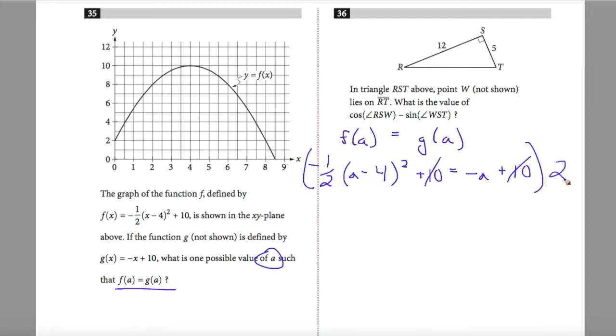I can also multiply this entire equation by 2 in order to eliminate my fraction. Actually, I multiply by negative 2 in order to eliminate both negatives. And here I get (a minus 4) squared equals 2a. I'm going to foil this out so I can simplify the like terms and factor back.